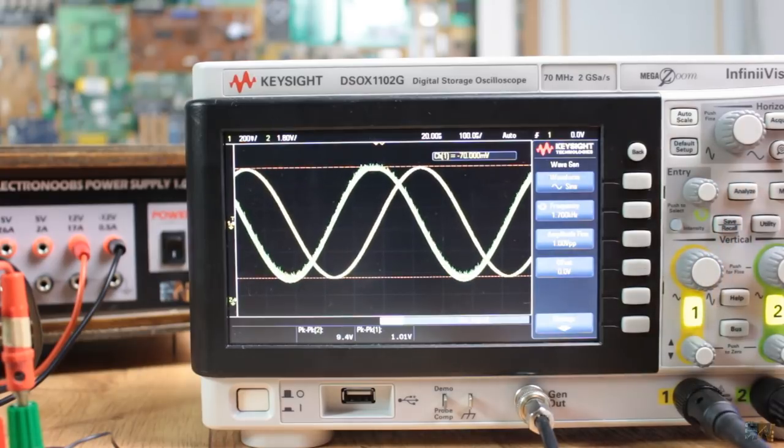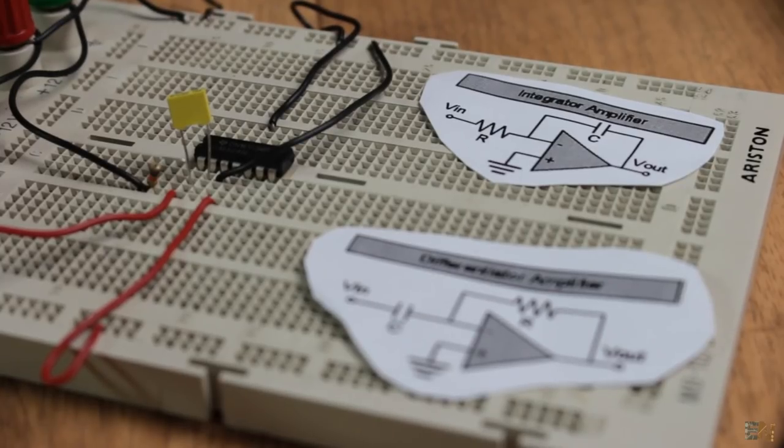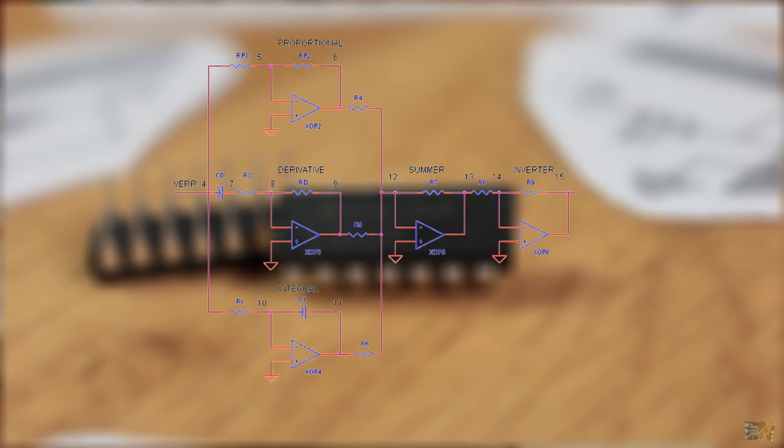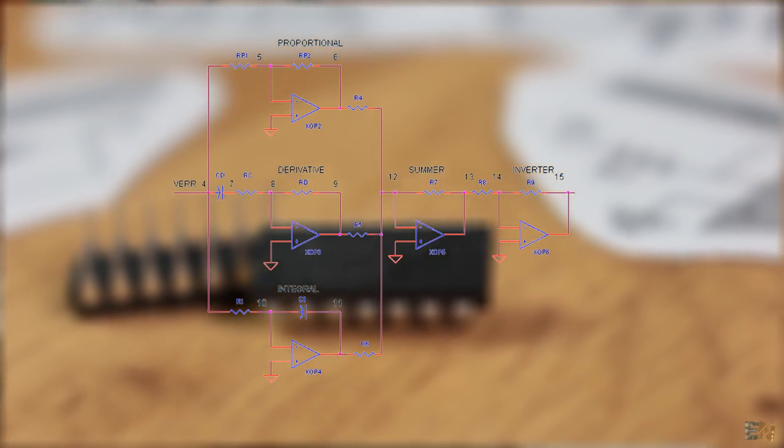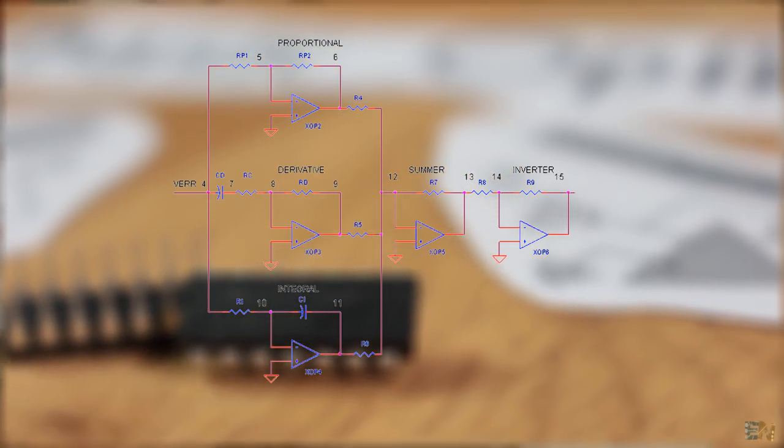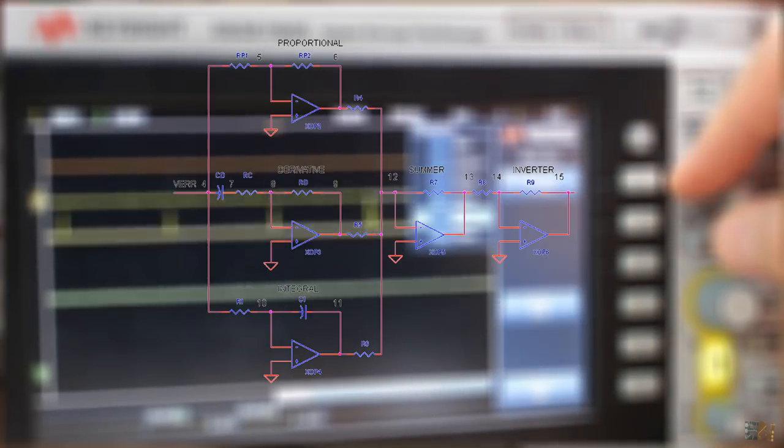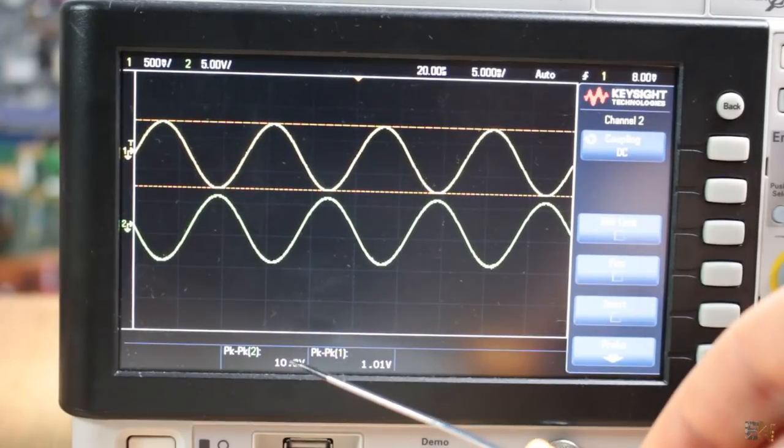So, there you go my friends, now you know a bit more about basic op-amps. One interesting configuration is a PID controller where we use the integrator, differential, inverter and summer configuration of the op-amps and by changing the resistor and capacitor values, we can tune the PID response.